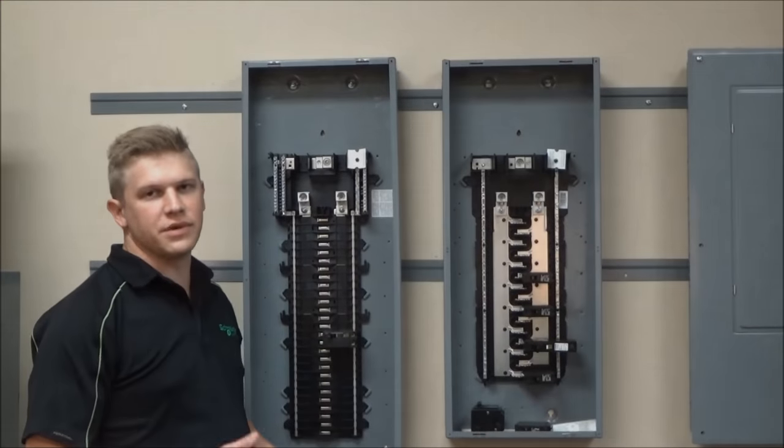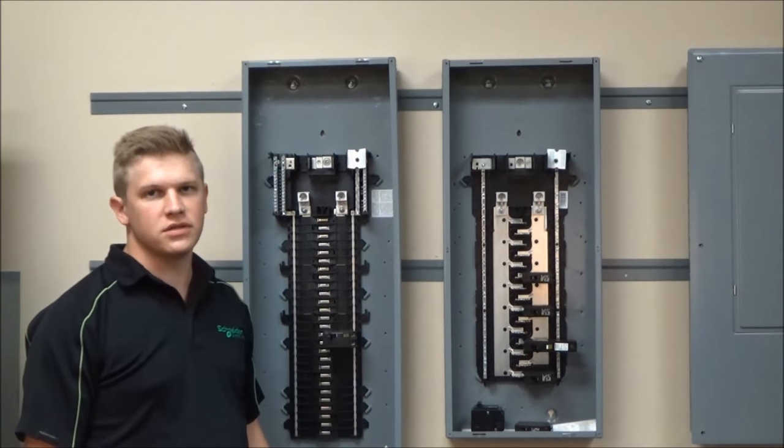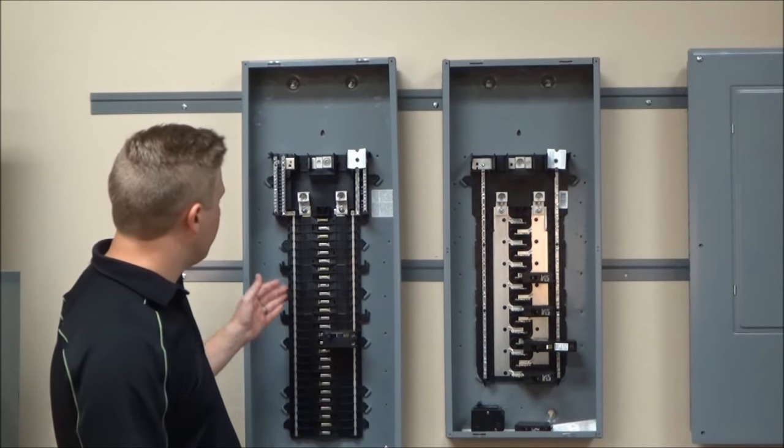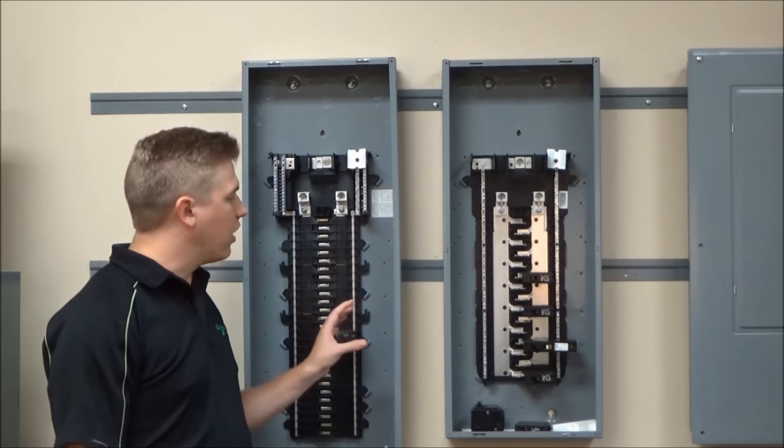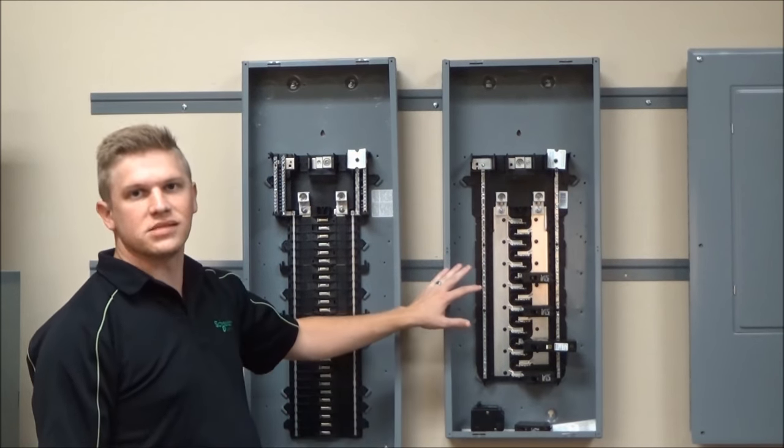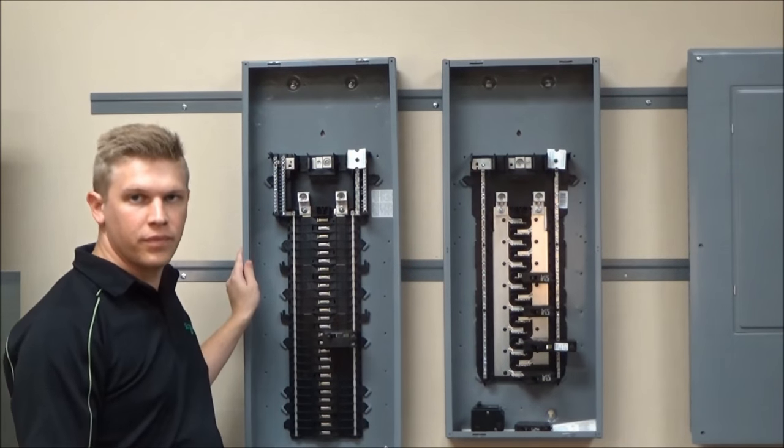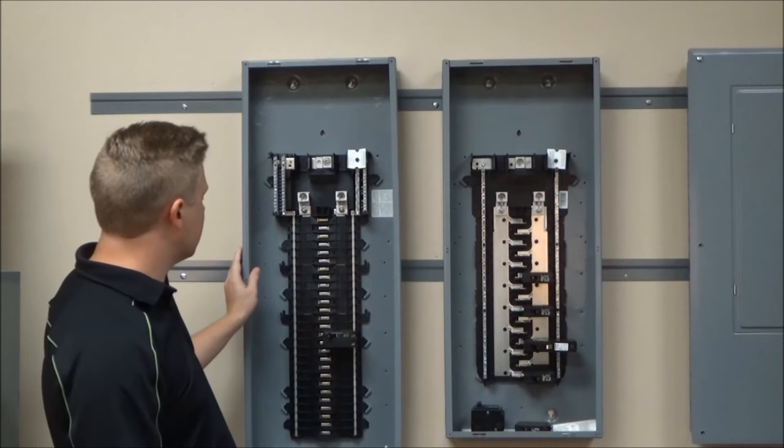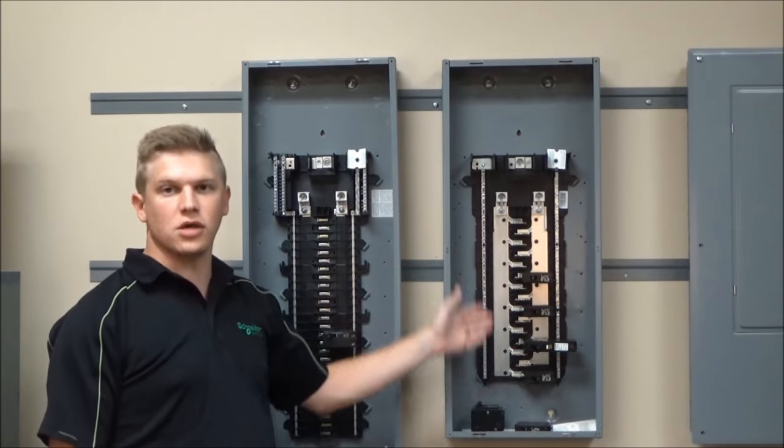In this video we'll be explaining some of the differences between QO and Home Line load centers. First of all, both load centers are tin-plated buses. However, the Home Line has aluminum and the QO has copper. Also notice that the QO has a shielded bus whereas the Home Line has open busing.